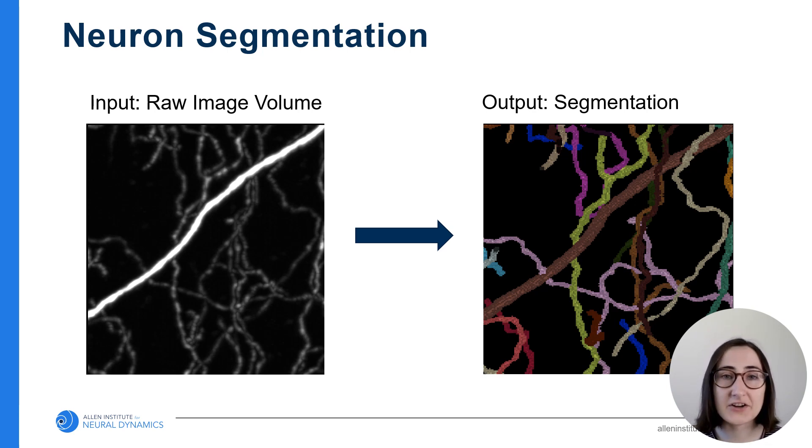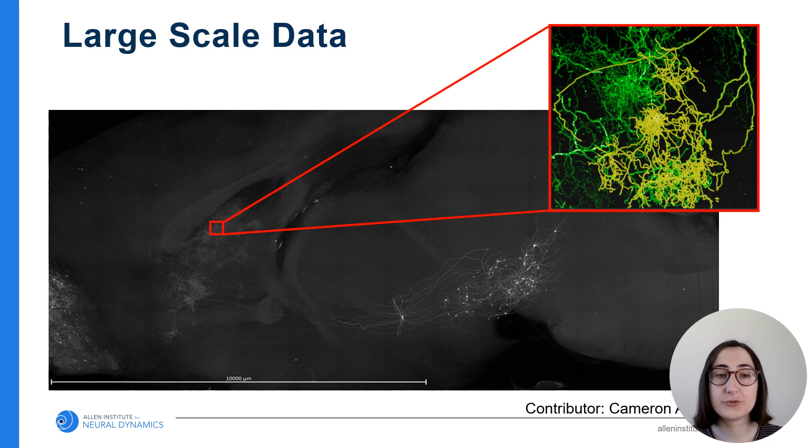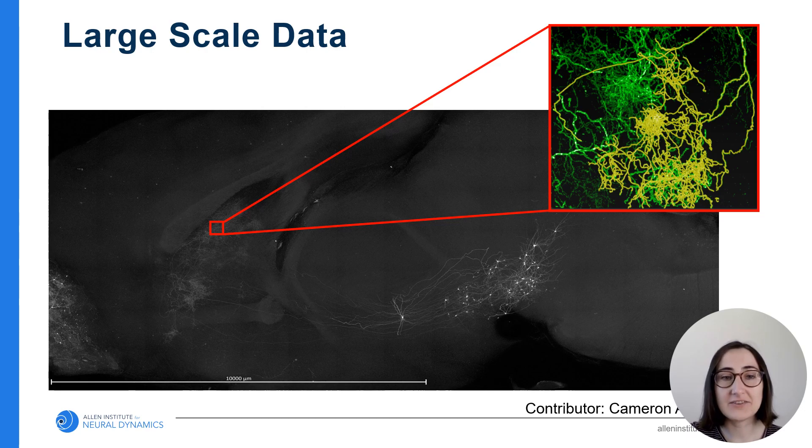This is a very challenging problem due to the scale of our data. To give you an idea of how long this would take to do manually, I have a tiny region of the thalamus highlighted. This region represents about one percent of one percent of the brain's total volume.